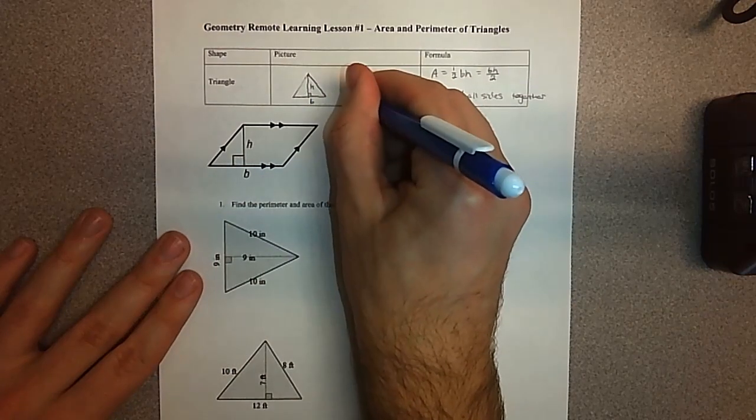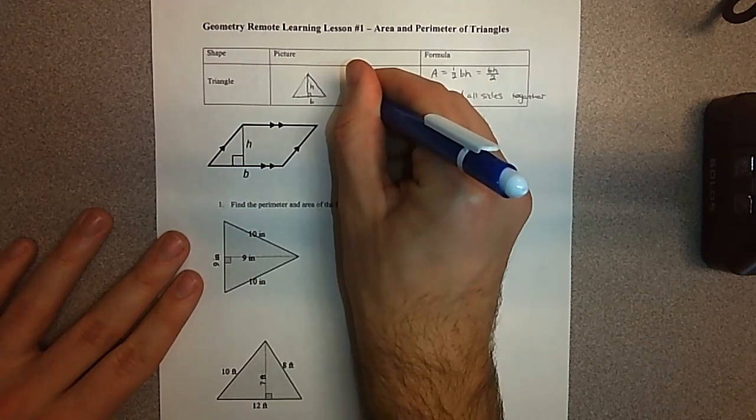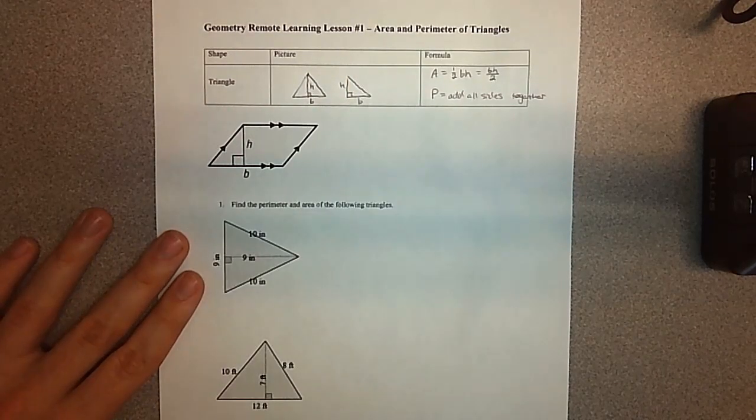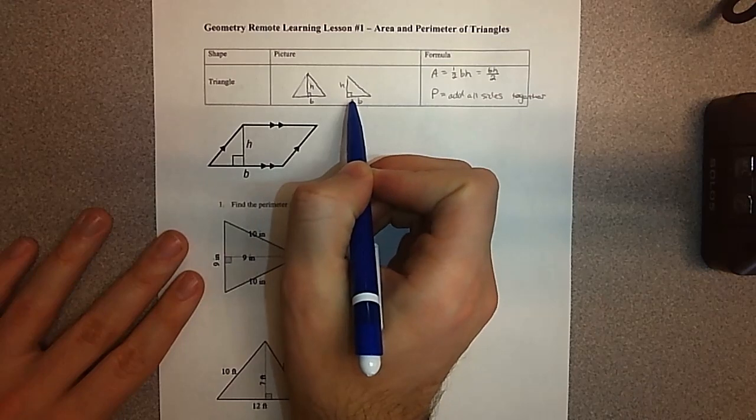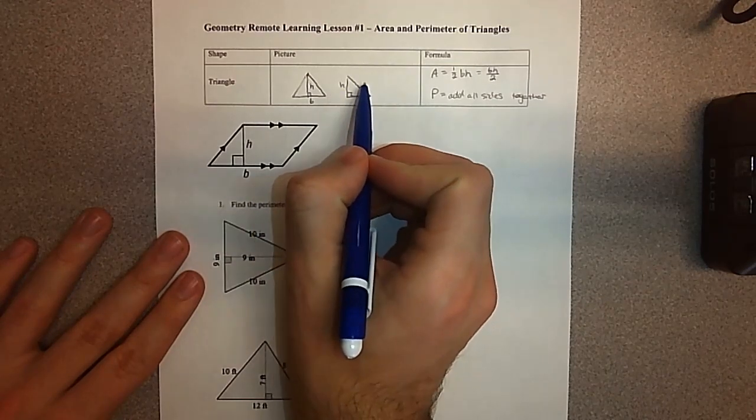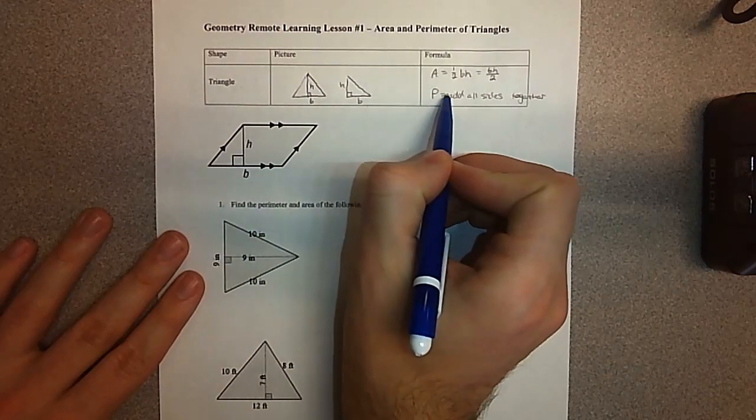Sometimes we have right triangles which then the height is actually one of our sides, but it doesn't have to be. And then again, if I want to find the perimeter, base plus height plus the hypotenuse would get my perimeter.